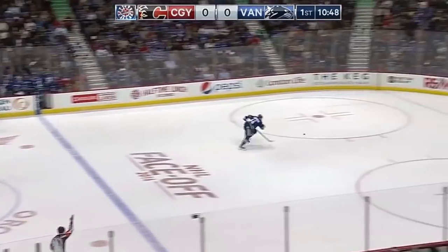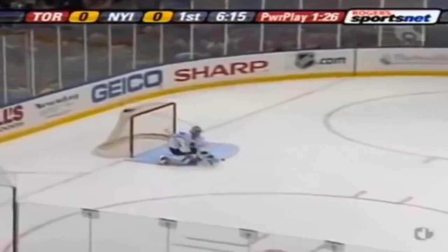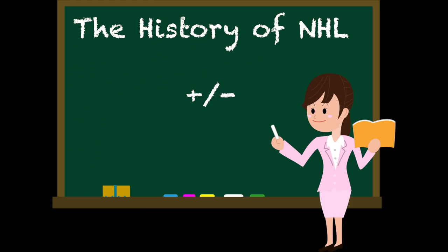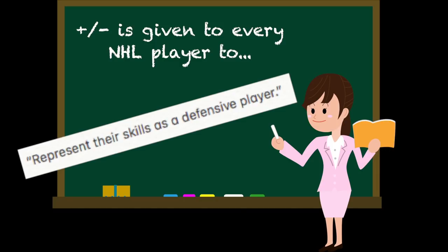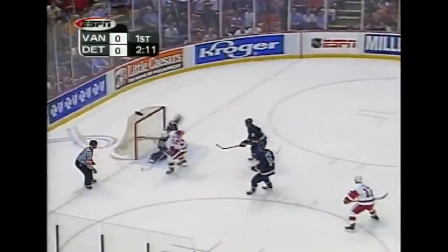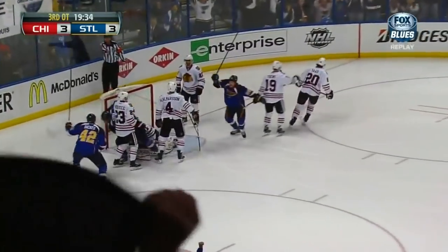To start off this series, we're going to be focusing on a stat that, depending on what side of the fence you're on, is either extremely important or completely useless: Plus/Minus. But first, a bit of history — I'll try to run through this as fast as possible so the hockey fans don't go completely insane. Plus/Minus is a stat given to every NHL player to, and I quote, represent their skills as a defensive player. Depending on the scenario in which a goal was scored, every player on the ice during the time of a goal receives either a plus or a minus to their stat.